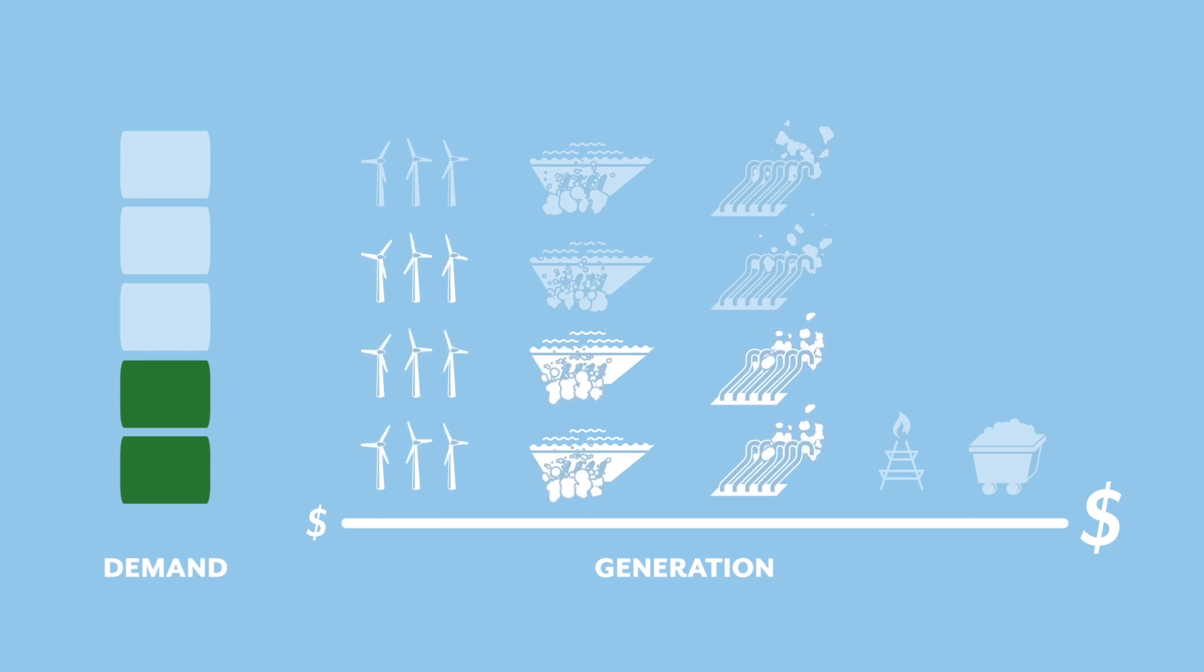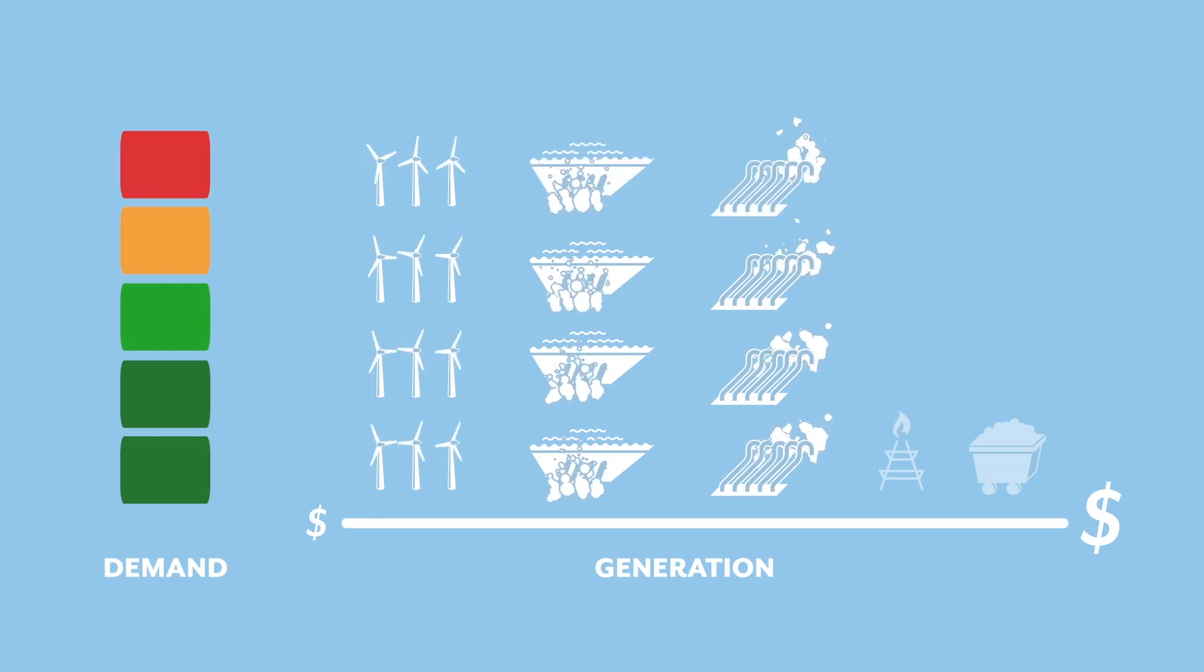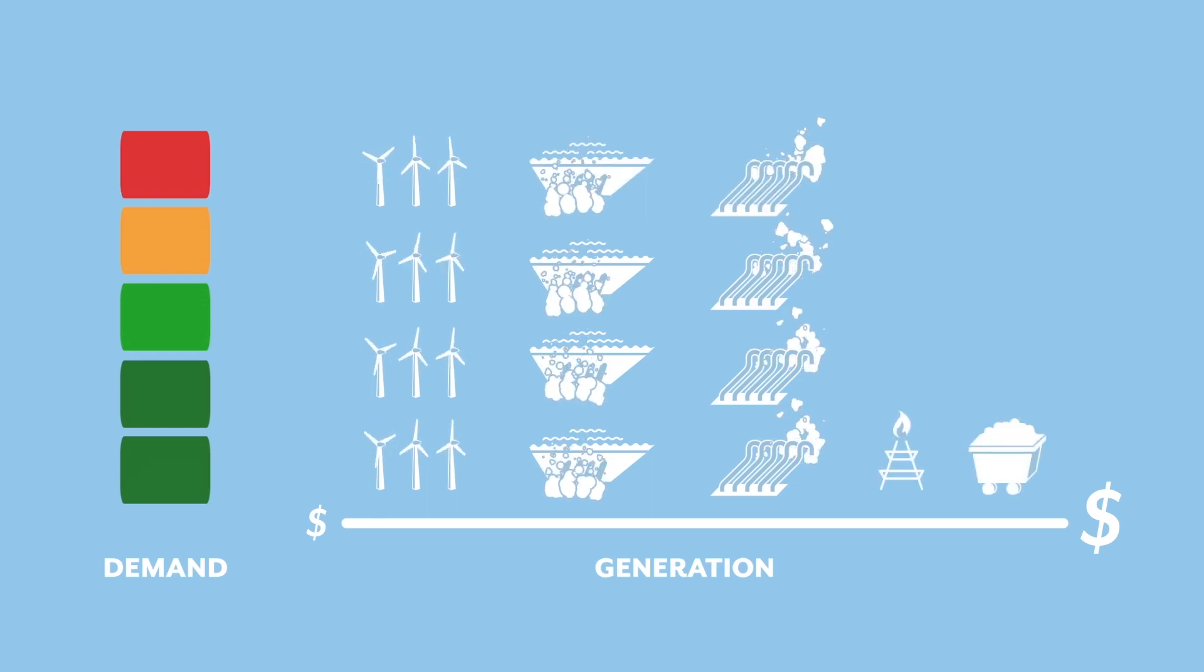To match supply and demand, they release the cheapest generation first. And when there's heaps of demand, they release power from more expensive sources. I'm starting to get it.